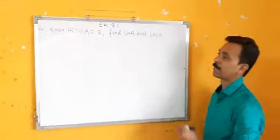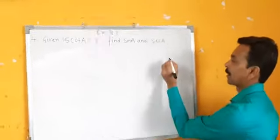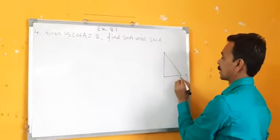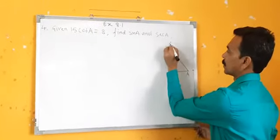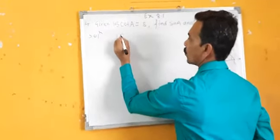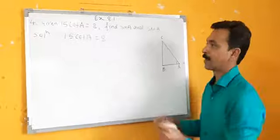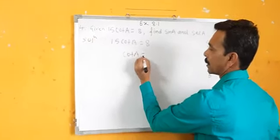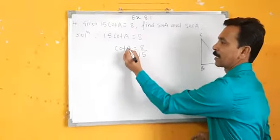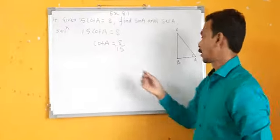4th sum is given: 15 cot A is equal to 8. Find sin A and sec A. First part — we have to draw a right angle triangle. This is A, B, C. Solution: 15 cot A is equal to 8, so cot A is equal to 8 upon 15, because A is the reference angle.